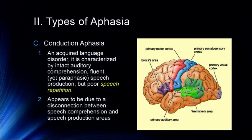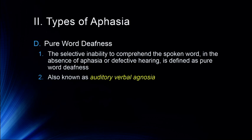Those are the general spoken language types of aphasia. There's also what's called pure word deafness — the selective inability to comprehend the spoken word in the absence of aphasia or defective hearing, also defined as auditory verbal agnosia. Remember, agnosia is an inability to recognize objects; in pure word deafness, it's an inability to recognize words as words. This isn't a general inability to comprehend language, but rather a complete inability to process individual spoken words.